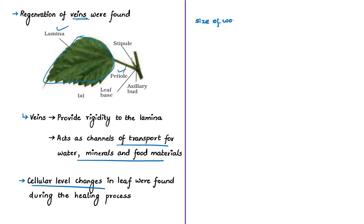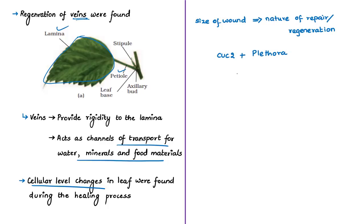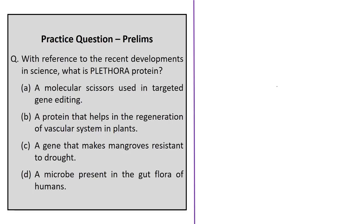The researchers found that as the size of the wound changes, the nature of repair also changes. When the size of injury goes beyond a particular threshold or beyond the handling capacity, the plant will not be able to regenerate or heal. They also noted this study was carried out almost after a 10-year period. Researchers hope that if these genes can be produced in surplus amounts in the future, plants will be able to withstand insect attack and other injuries. You should keep a note on plethora and CUC2 gene and in general about repair mechanisms at the level of tissues.